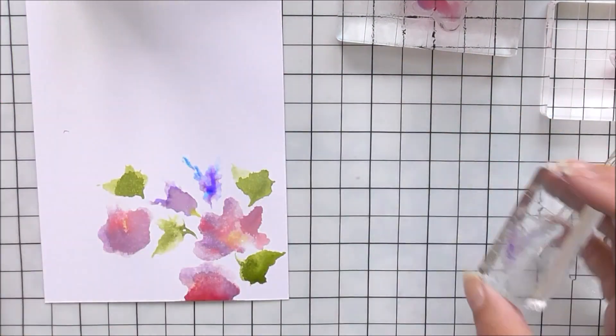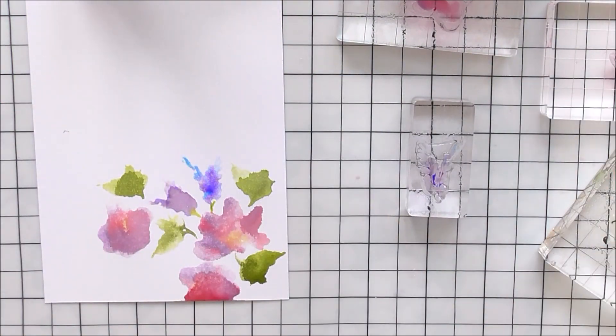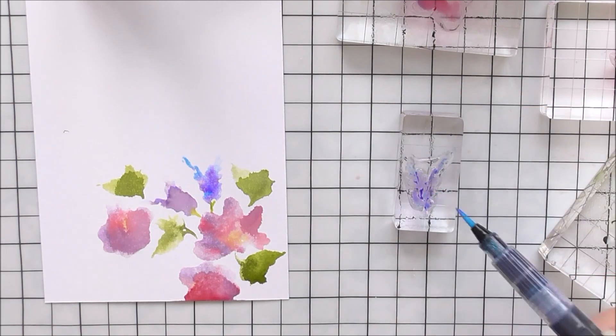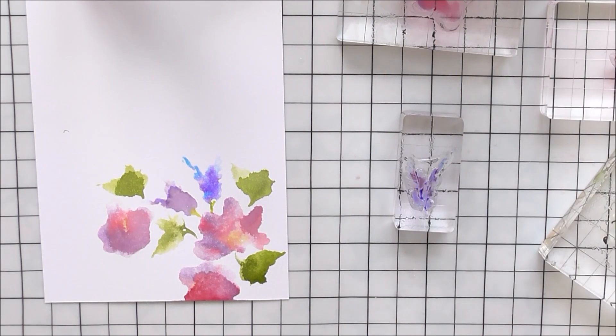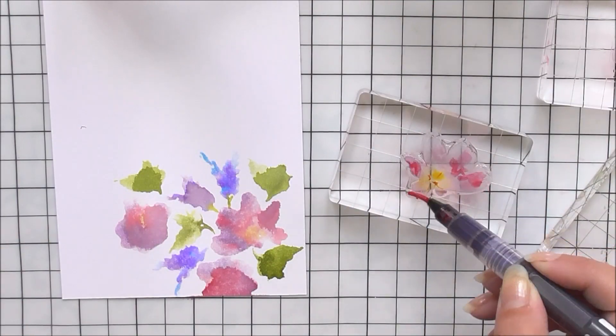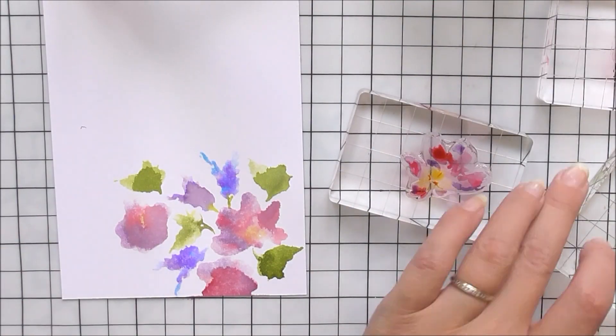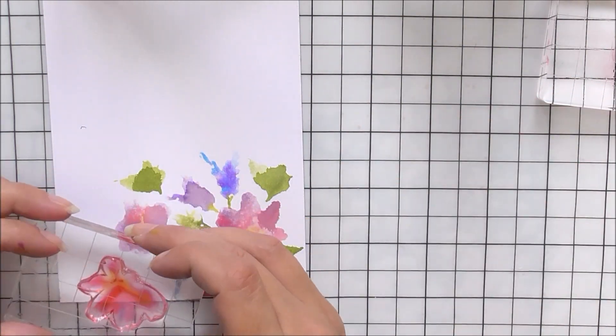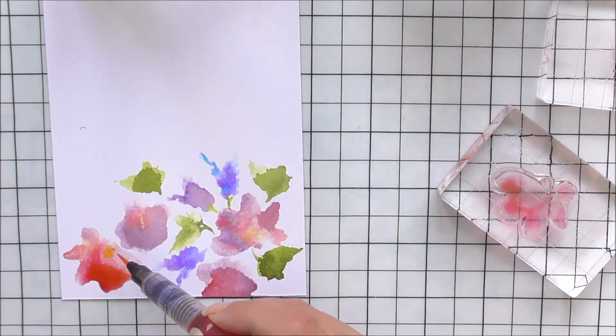For the little blossom piece, again that's the Sea Breeze and the midnight violet and a little bit of the green that I've just touched to the paper. Either the Moss or the Lime Aid would work for this. It's completely up to you how dark you want to go with it.